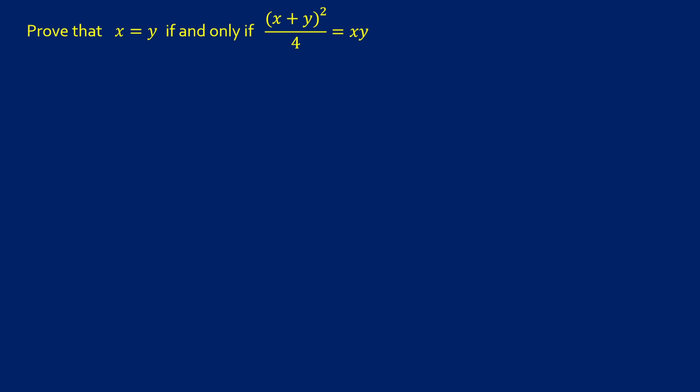Today we're going to do a quick algebra proof. It's an if and only if. We want to prove that x is equal to y if and only if (x + y)² / 4 is equal to xy.